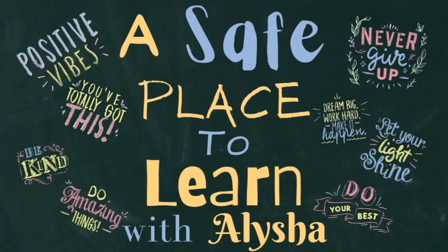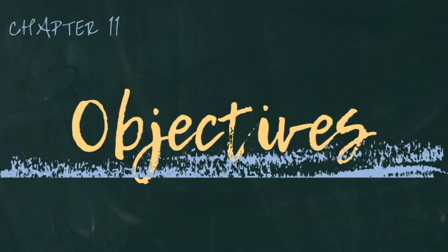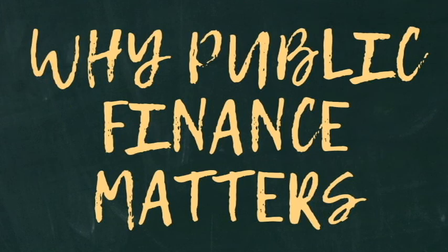Hey guys, welcome to a safe place to learn the good and the bad with Alicia. In today's video I'll be reviewing chapter 11 of Governing Texas: Public Finance. The objectives for this chapter include being able to explain the purpose of the state budget and what is typically included, describe the general pattern of state spending in Texas and where state revenue comes from.